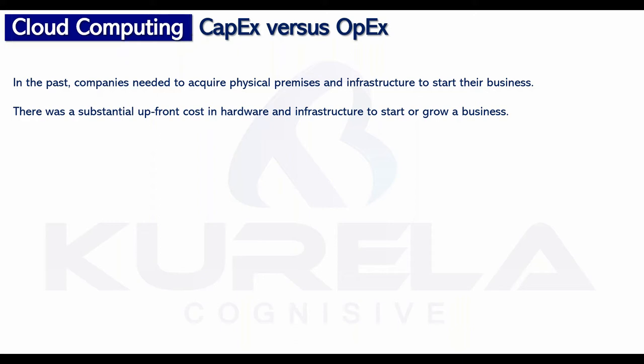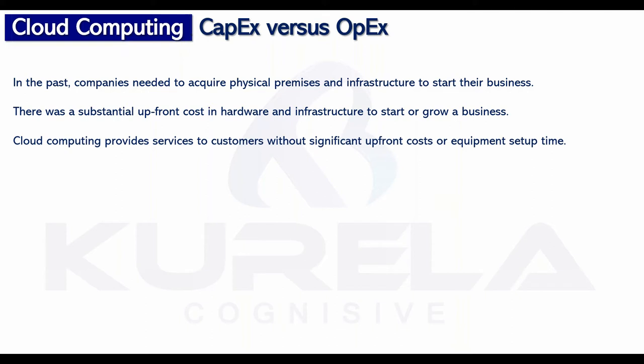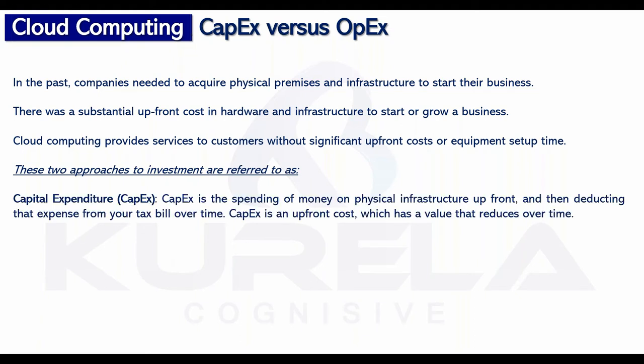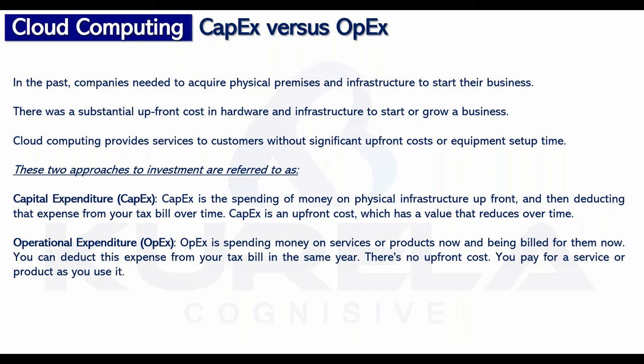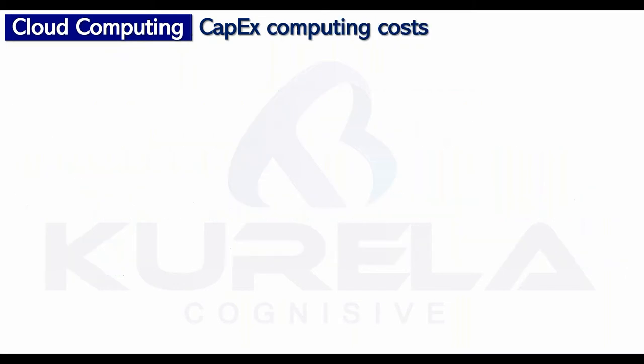Companies would buy infrastructure to start and grow the business — that's how it was, an initial upfront cost. But cloud computing provides services to customers without significant upfront cost, and it saves not just money but a lot of time as well. The capital expenditure model requires investing all your money at the beginning, while the operating expenditure model is more of a cloud adoption model.